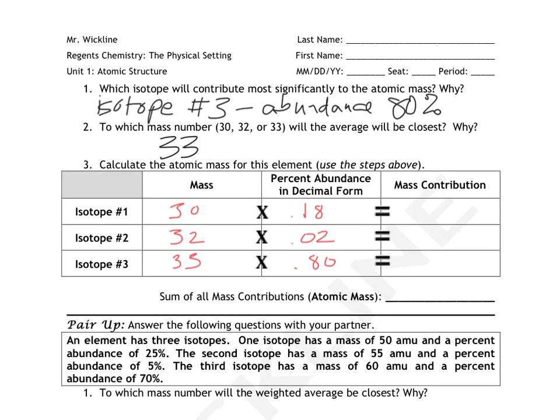So you need a calculator and you need to multiply this number times this number, this number times this number to get these contributions. I'll pause the video so you can, or you pause the video so you can calculate that and I'll have the answers when you come back. One of the things that strikes me about these mass contributions is how small that one is and how large that one is. And it's totally explained by the percent abundance. The percent abundance is only 2% in this one. So the contribution is very small and the percent abundance is 80% in this one, so it's much larger.